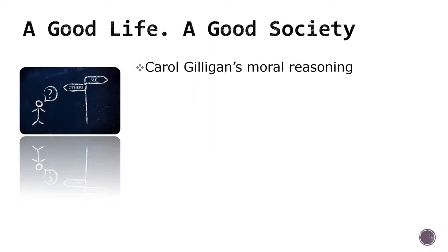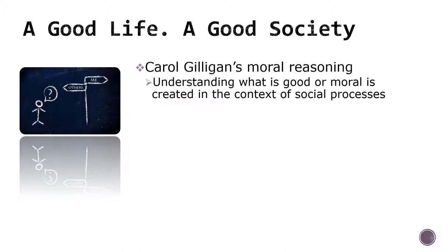Holmes expands upon this fundamental component by examining Carol Gilligan's classic work on moral development, which was developed in response to Kohlberg's work. Her project was to point out the masculine dominance in Kohlberg's work, so she took women as the object of her study rather than men or the more neutral humans. Gilligan asserts that what is good or moral is always created within the context of social processes. No individual develops a sense of right or wrong in a vacuum. Thus, cultural biases affect moral reasoning. We cannot escape it or have some higher order of morality over it.